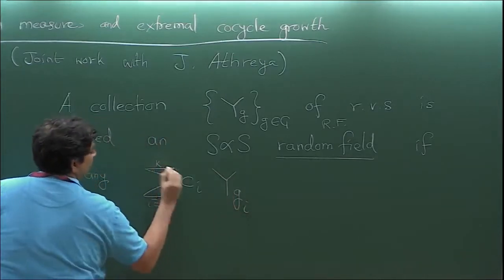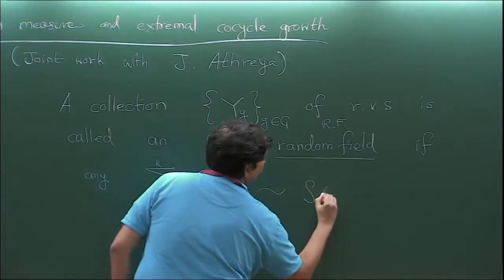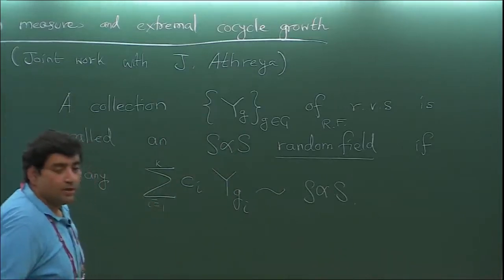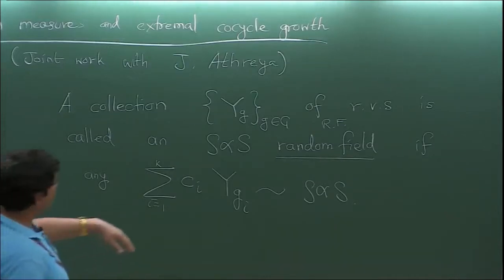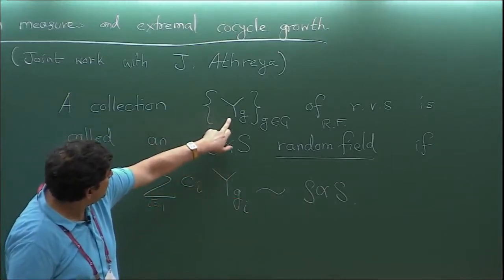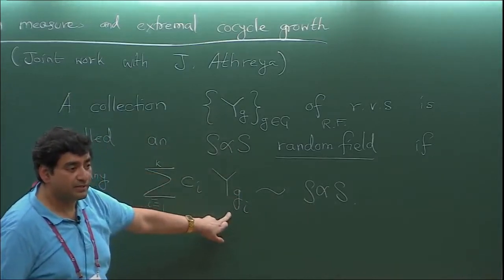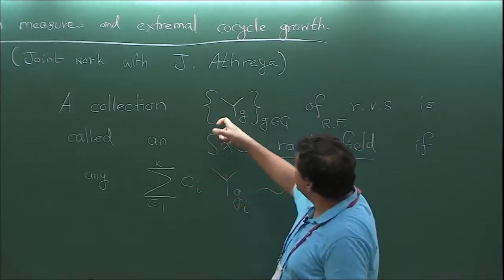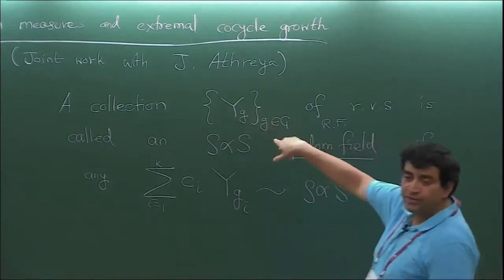Of course the scale parameter sigma would depend on the coefficients. So if you have a collection of random variables and you take any finite linear combination, that will be symmetric alpha stable. In particular, all the individual Y_g's follow SαS as well. Once you specify all finite linear combinations you essentially specify the distribution, so this uniquely specifies the joint distribution of all the Y_g's.